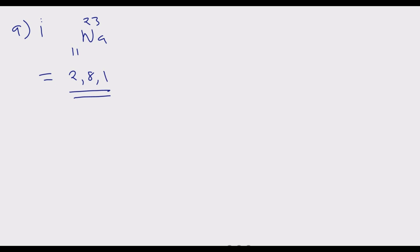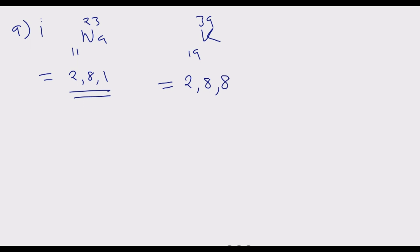Now we look at potassium. From the periodic table, potassium has a mass number of 39 and an atomic number of 19. The electronic configuration starts with the first shell: 2, then the second shell: 8, giving 10. Since 10 is still less than 19, we subtract: 19 minus 10 = 9, then 9 minus 8 = 1. So potassium's electronic configuration is 2, 8, 8, 1.